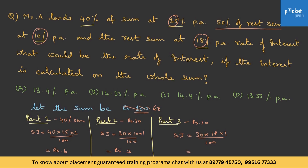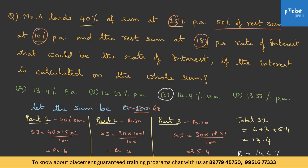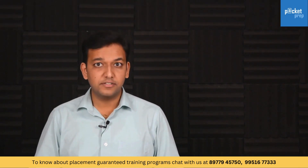The remaining 30 rupees at 18%: SI = 30×18×1/100 = 5.4. Total SI = 6 + 3 + 5.4 = 14.4. Since the total interest on rupees 100 is rupees 14.4, the equivalent rate of interest is 14.4%. Answer: option C. Whenever we assume the sum as 100, whatever answer we get can be directly converted to a percentage. Practice more questions to get a grip on simple interest.